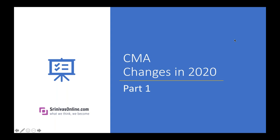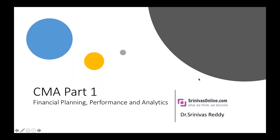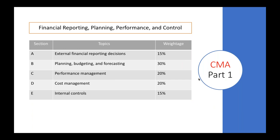What changes are going to take place in the syllabus and when they are going to take effect. CMA Part 1 — the title is going to be Financial Planning, Performance and Analytics. So the title from next year onwards is going to be Financial Planning, Performance and Control. Let me share with you the sections, the content, and the weightage given by the Institute of Management Accountants.